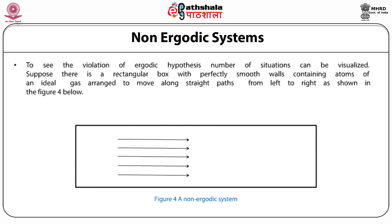Non-ergodic systems. To see violation of the ergodic hypothesis, consider a rectangular box with perfectly smooth walls containing atoms of an ideal gas arranged to move along straight paths. Since the walls are smooth, the atoms will keep moving back and forth between the left and right walls and will never pass through any other points in the box, clearly violating the ergodic hypothesis. It must be noted that this is a highly improbable situation, and a small disturbance can randomize the velocities through collisions.